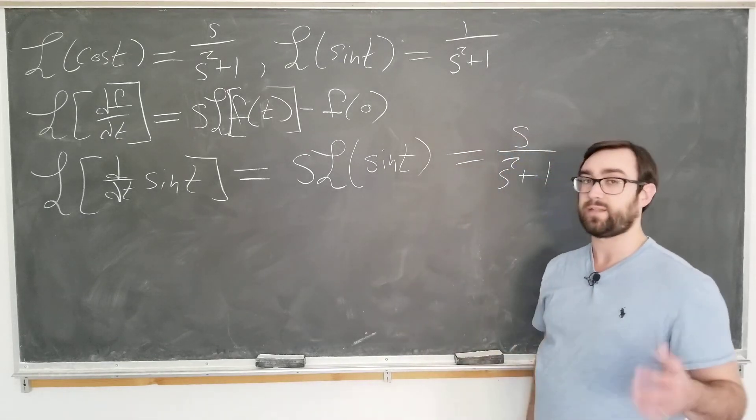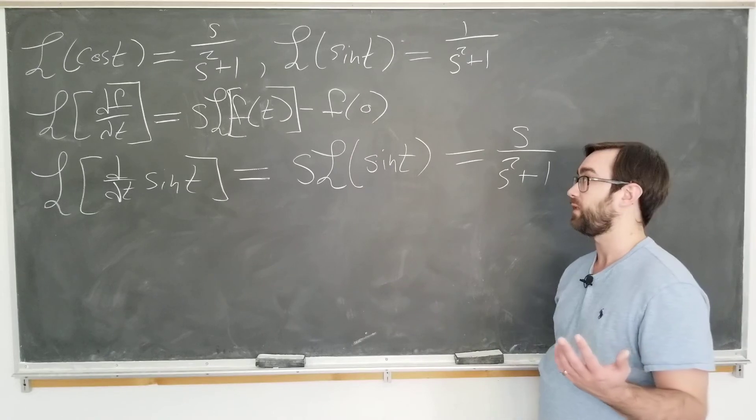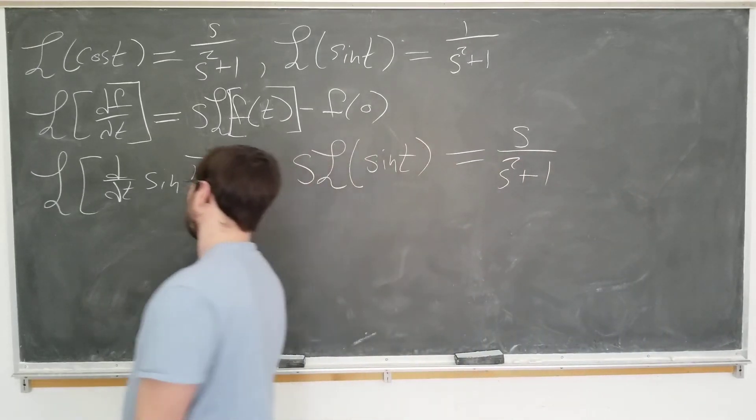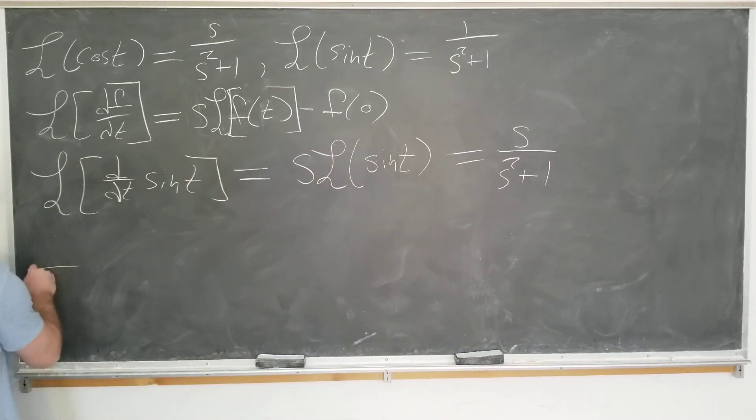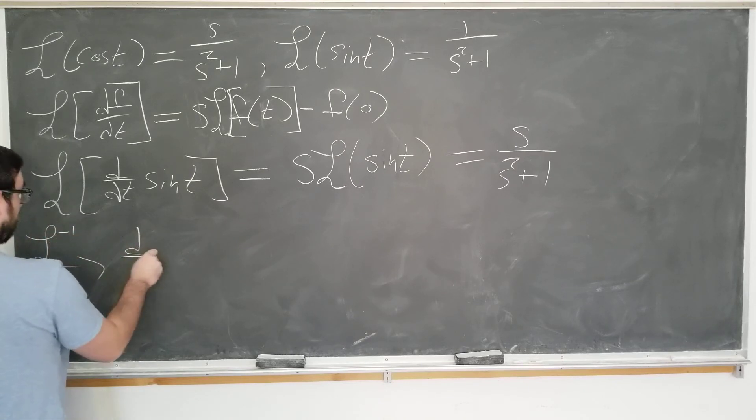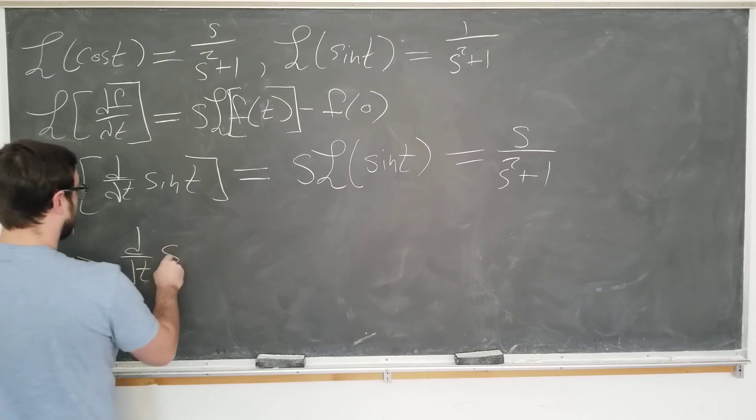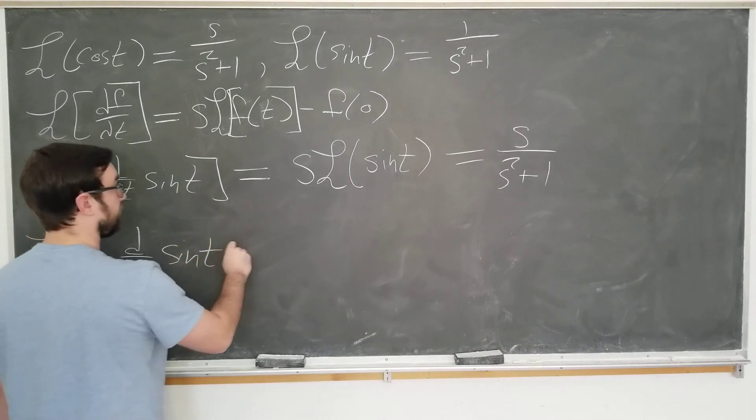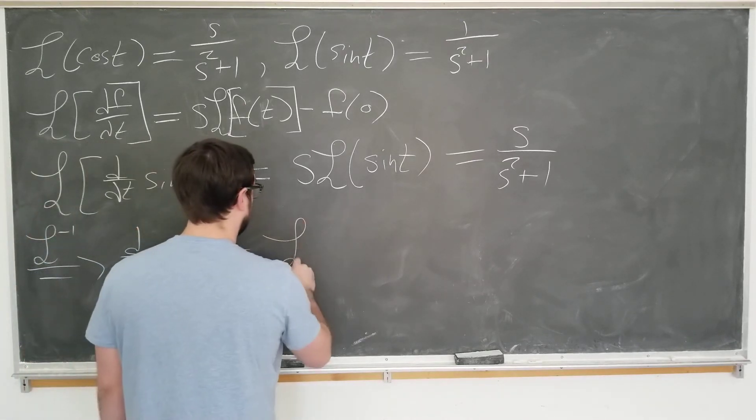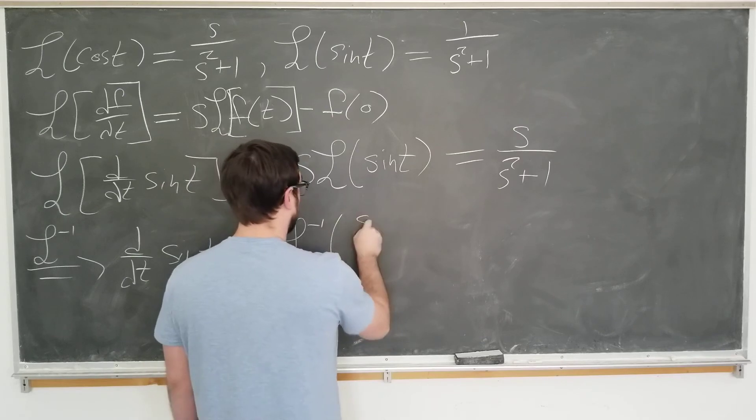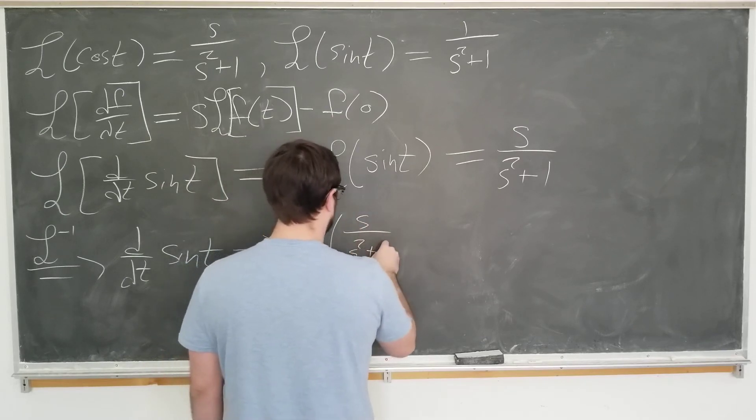And now we just have to take the inverse Laplace transform of both sides to obtain our answer. So we take Laplace inverse of both sides. We have the derivative of sine t is equal to the inverse Laplace transform of s over s squared plus 1.